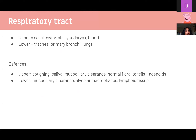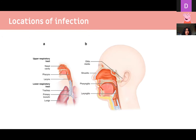In the lower respiratory tract, you have mucociliary clearance, alveolar macrophages, and other lymphoid tissue lining the areas. If any of these defenses break down, you get infections. Specifically for upper respiratory tract infections, it can involve the nose.